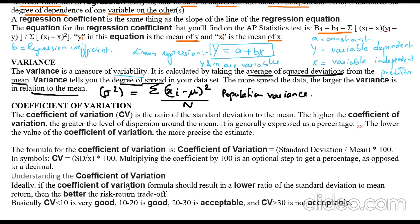The last option is the coefficient of variation. It is the ratio of the standard deviation to the mean. The higher the coefficient of variation, the greater the level of dispersion around the mean, and it is expressed as a percentage. The lower the value, the more precise the estimate. The formula is: (standard deviation / mean) × 100. If CV is less than 10 it is very good, 10–20 is good, 20–30 is acceptable, and greater than 30 is not acceptable.